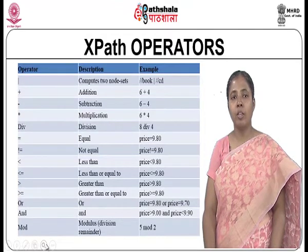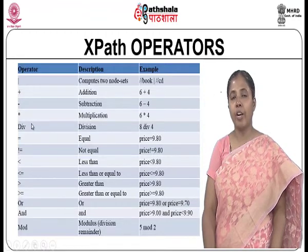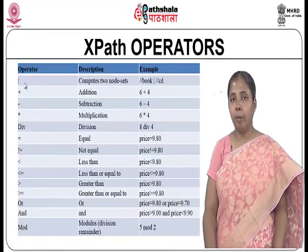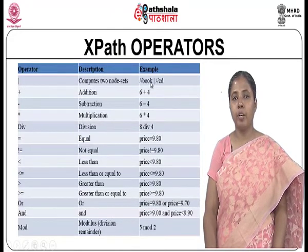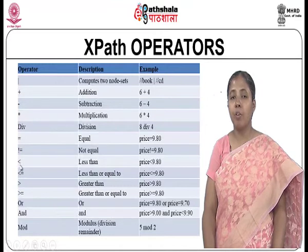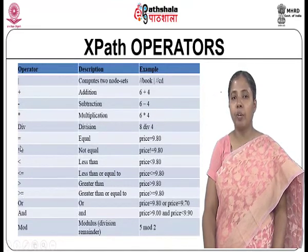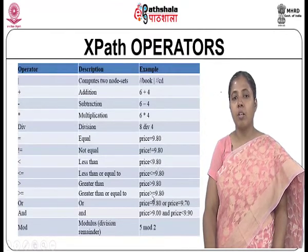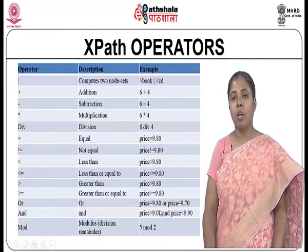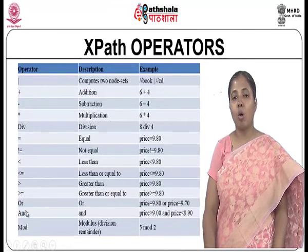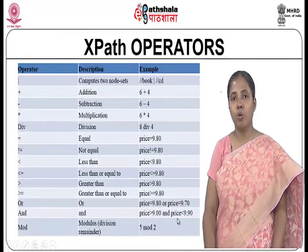Operators are also used with XPath. The pipe operator (|) computes two node sets — for example selecting all book nodes and all cd nodes. Addition and comparison operators come with predicates; we have seen that price should be more than 35 using the greater-than operator. XPath also supports relational operators and boolean operators such as or, and, and mod, all used within XPath expressions.